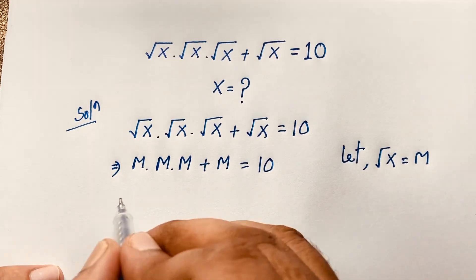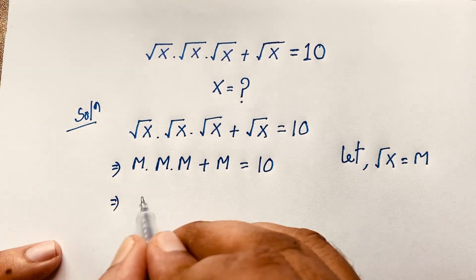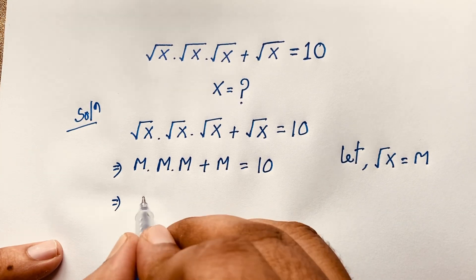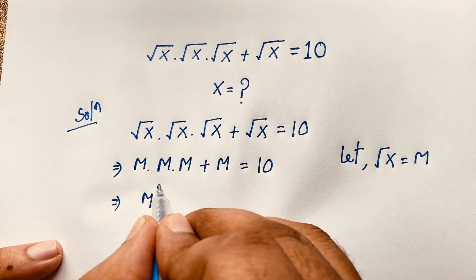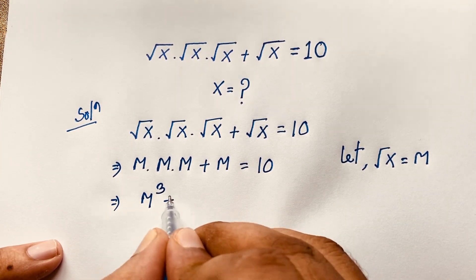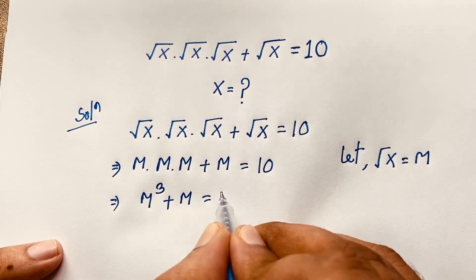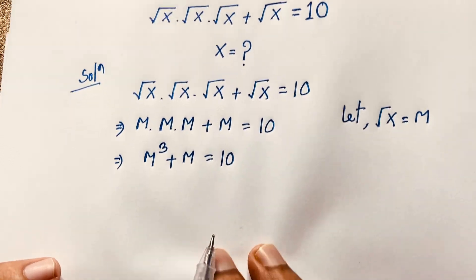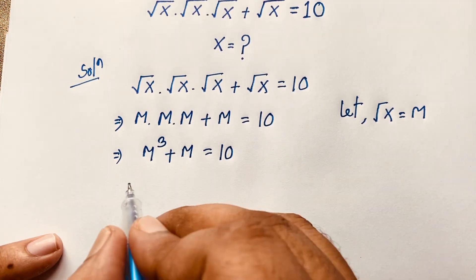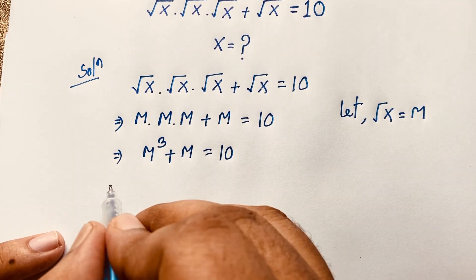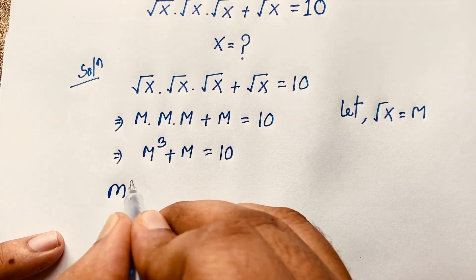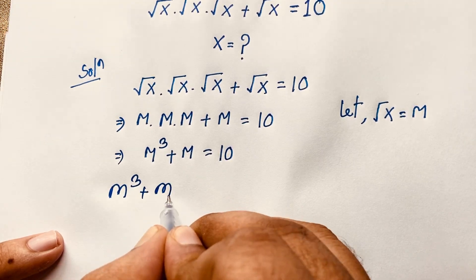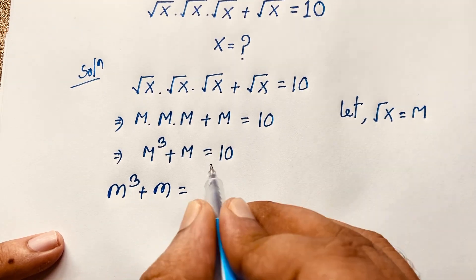So I can see m times m times m plus m is equal to 10. It is a nice cubic equation — m times m times m is m to the power 3, so m³ plus m is equal to 10.